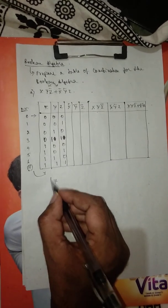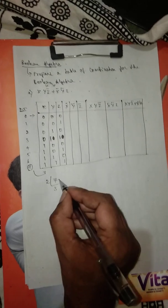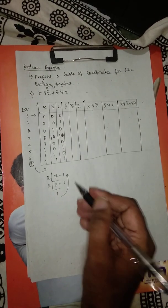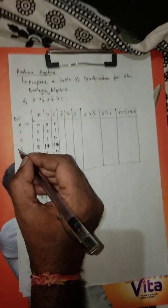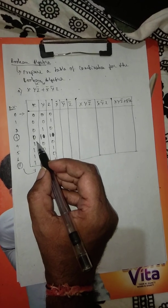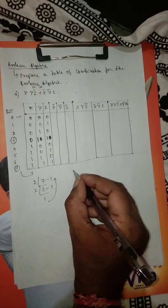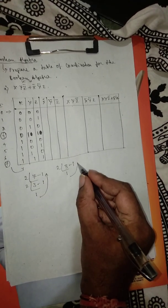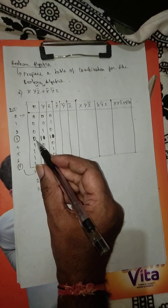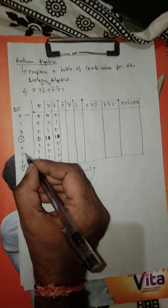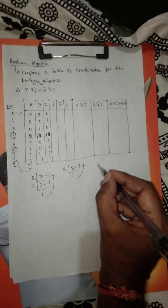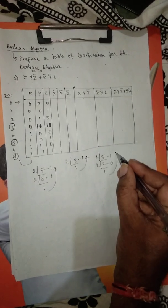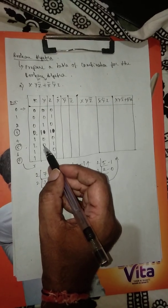To convert 7 to binary, you divide by 2: 2 threes are 6, remainder 1; then 2 ones are 2, remainder 1. Writing remainders in reverse gives 1, 1, 1. Similarly for 3: divide by 2, remainder 1, then quotient 1 — reverse gives 1, 1, with the leading value equal to 0. For 5: divide by 2, 2 twos are 4, remainder 1; then 2 ones are 2, remainder 0 — reverse gives 1, 0, 1.